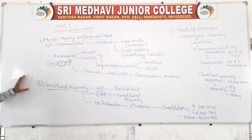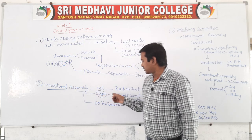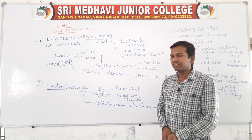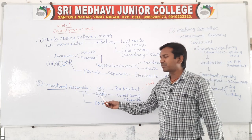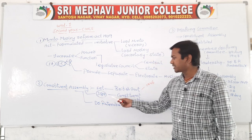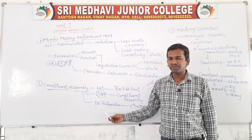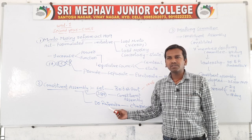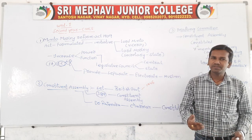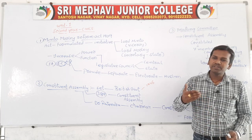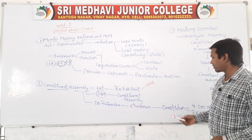The next point is the Constituent Assembly. Constituent assemblies were mainly set up by the British government in 1946. The total members of the Constituent Assembly were nearly 389 members. Dr. Rajendra Prasad was the chairman of the Constituent Assembly. He was later elected as the first President of India because he had acted as chairman of the Constituent Assembly and understood the responsibility.